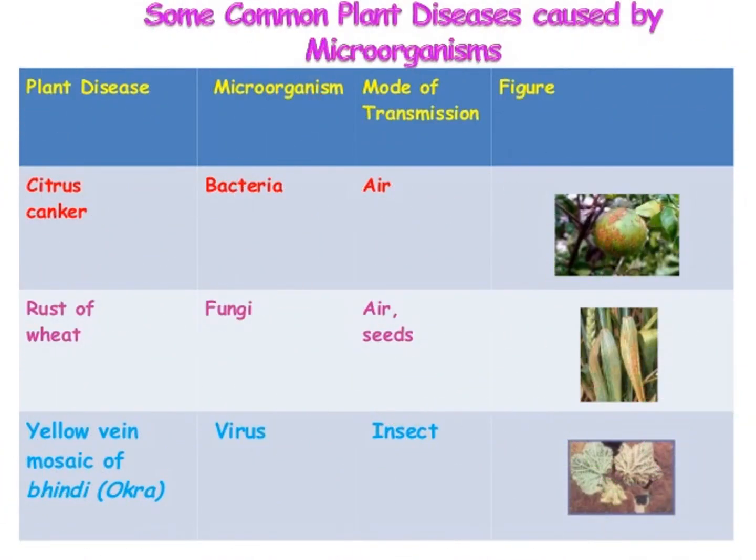Some common plant diseases caused by microorganisms: Citrus canker — microorganism: bacteria, mode of transmission: air. Rust of wheat — microorganism: fungi, mode of transmission: air or seeds. Yellow vein mosaic — the microorganism responsible is a virus, mode of transmission: insect.